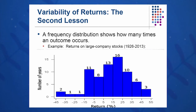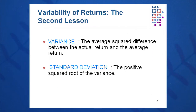These are the statistics from the Ibbotson and Sinkfeld study from 1926 to 2013. From that, we can calculate all kinds of statistics, and some of the more popular ones are the variance and standard deviation, so we're going to go through how to do that.